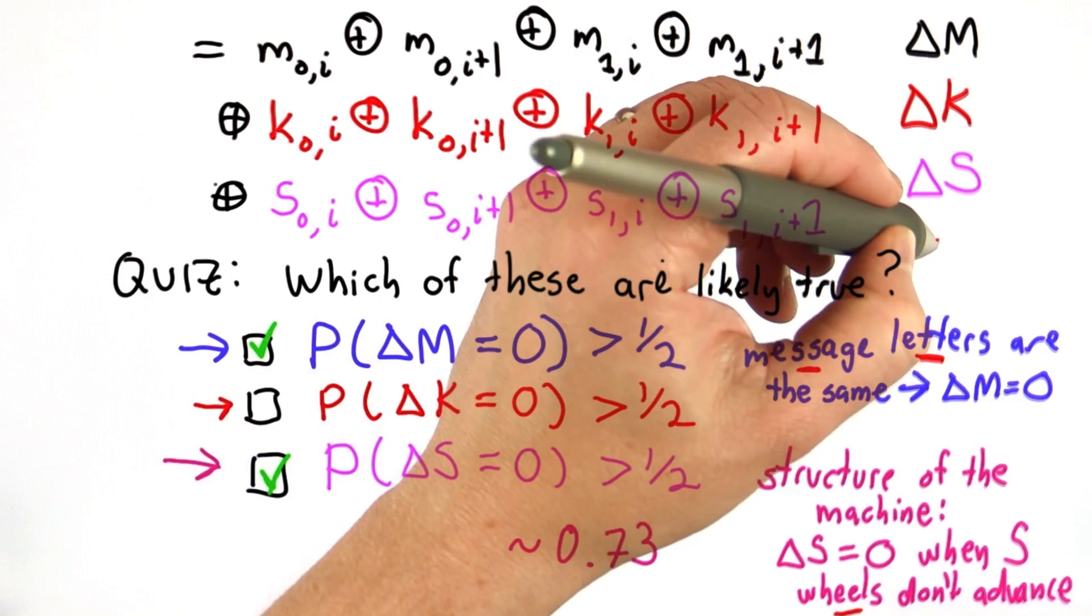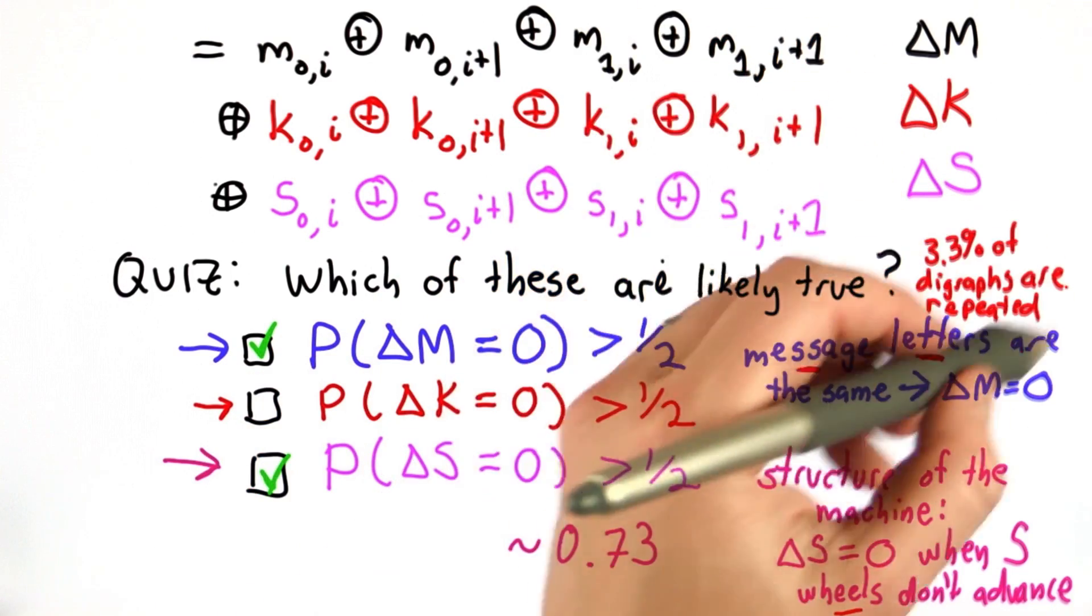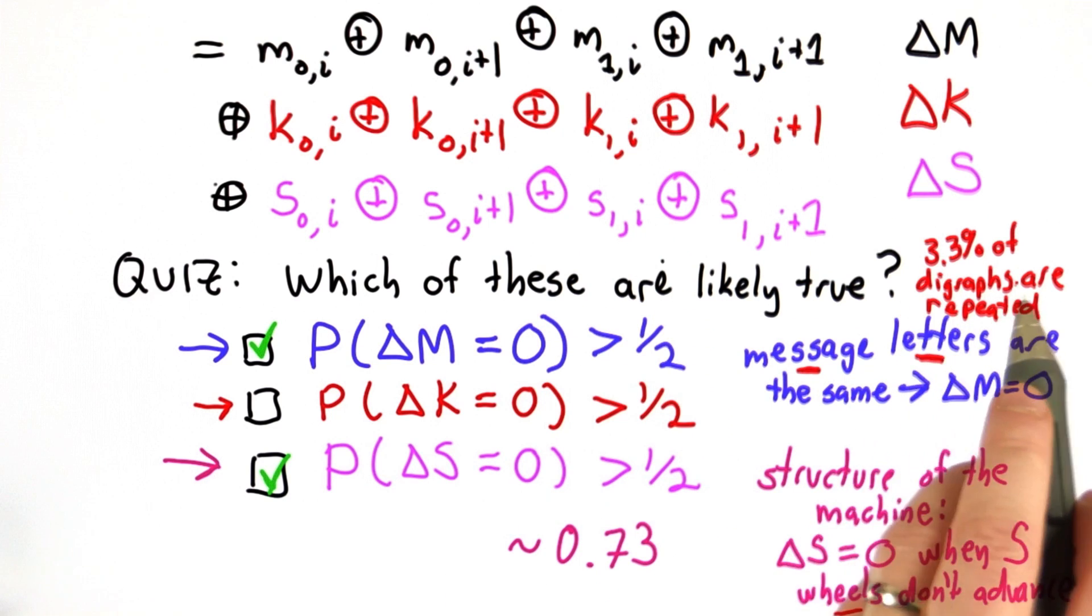And it turns out that this is a property of German that about 3.3% of digraphs, meaning pairs of two adjacent letters, are the same letter.